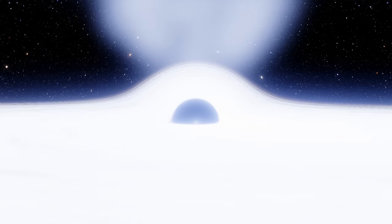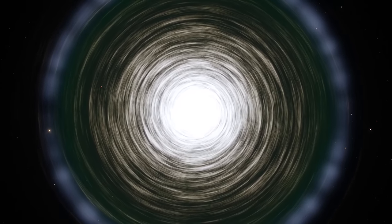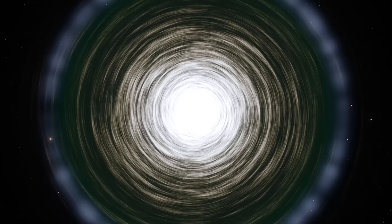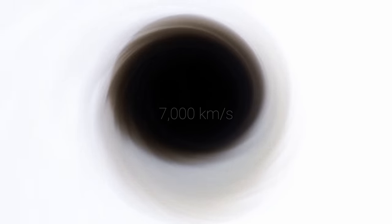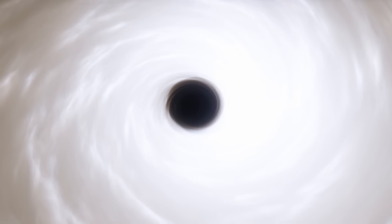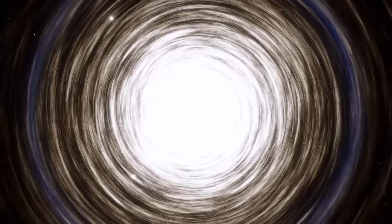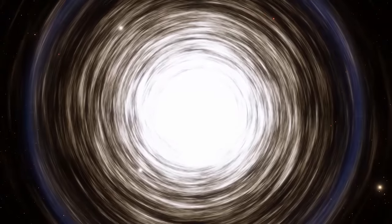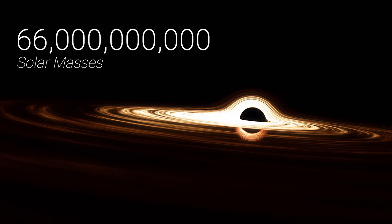When scientists attempted to reverse-engineer the properties of this black hole from its spectral data, they discovered that matter must be crossing its event horizon at more than 7000 kilometres per second, in order to generate this profile of emissions. Such ungodly speeds and their associated temperatures could only have been the product of a gravitational influence exerted by a record-breaking black hole, with an unfathomable mass of 66 billion times that of our Sun.